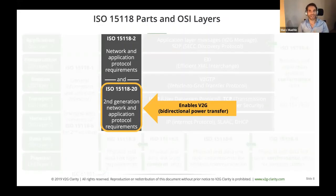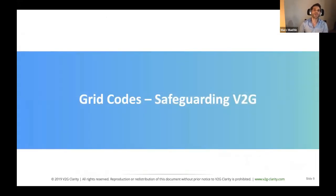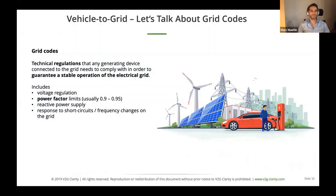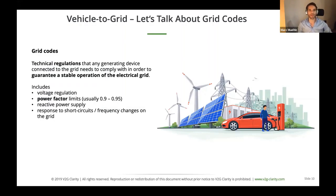Dash-20 enables vehicle to grid — bidirectional energy transfer — so we can use the car as an energy source to stabilize the grid or power your home in an emergency. When we talk about vehicle to grid, we need to discuss grid codes — technical regulations that any generating device connected to the grid must comply with to guarantee stable, safe operation. These include voltage regulations, power factor limits (typically 0.9 to 0.95), reactive power supply, and response to short circuits and frequency changes.